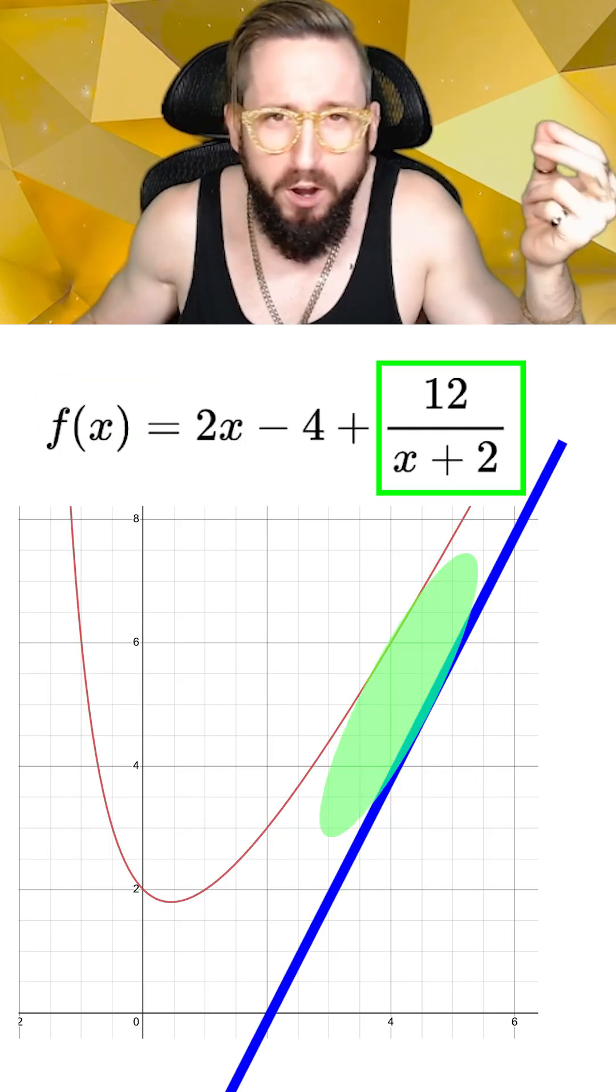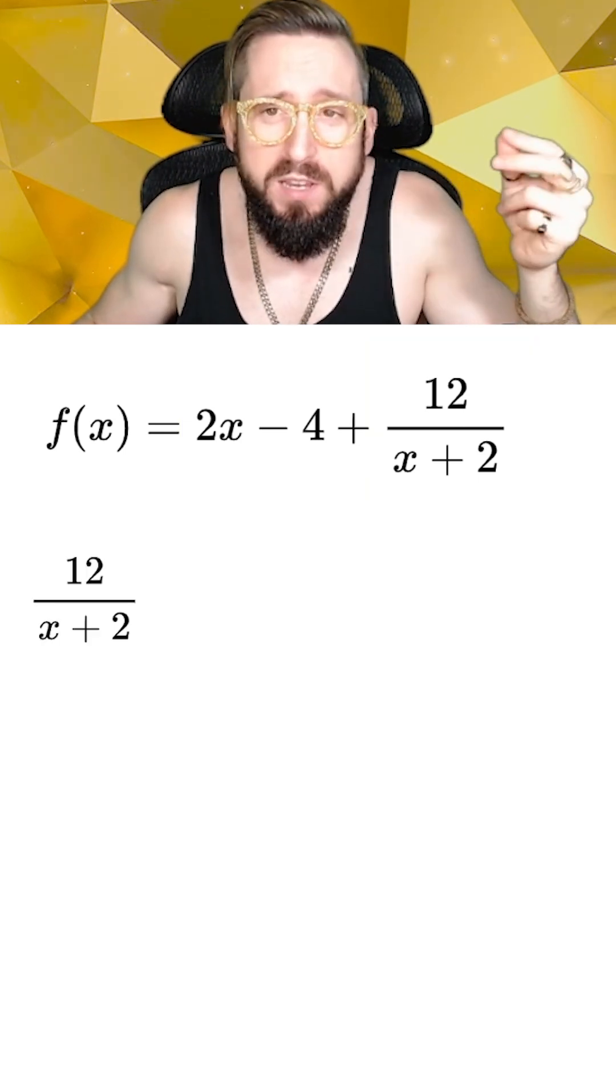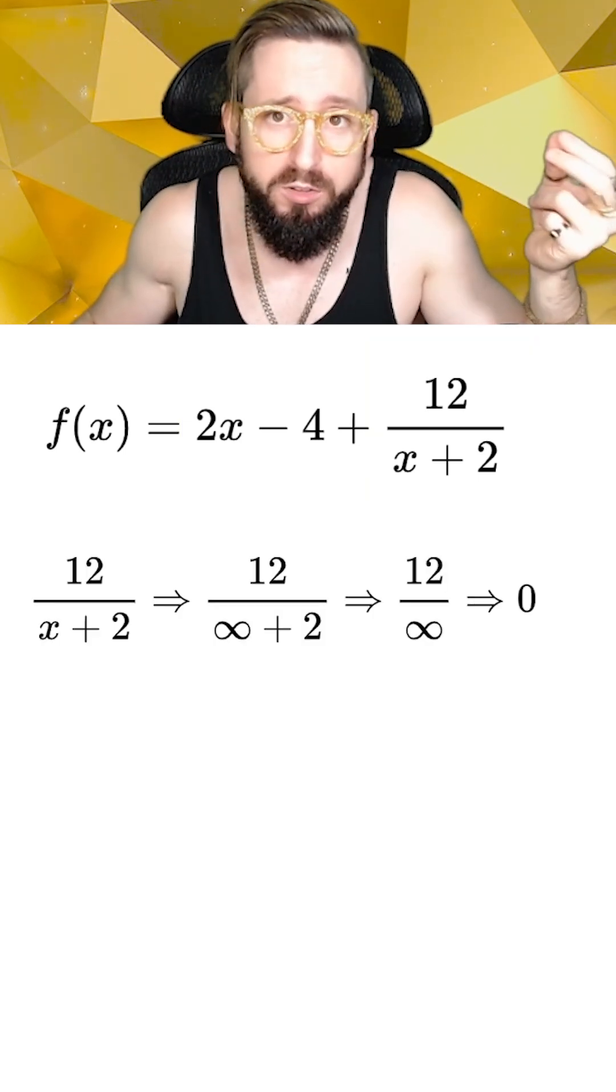This remainder can be thought of as some error that keeps the function away from touching the line. If we focus just on the remainder, we can see that taking the limit at infinity causes the remainder to go to zero.